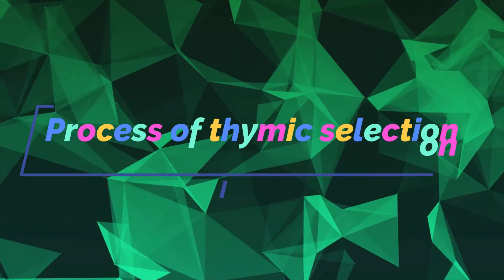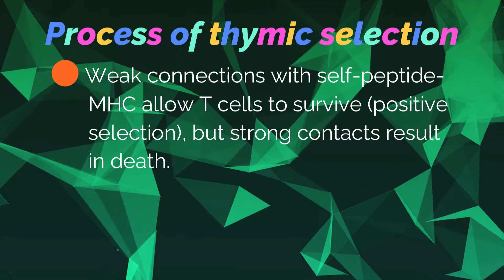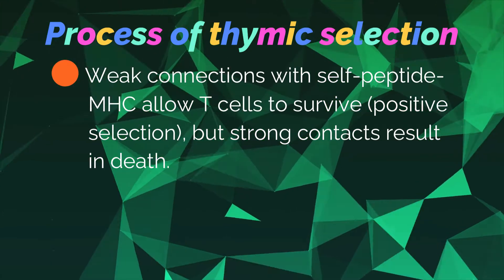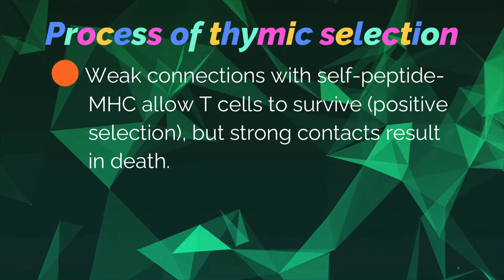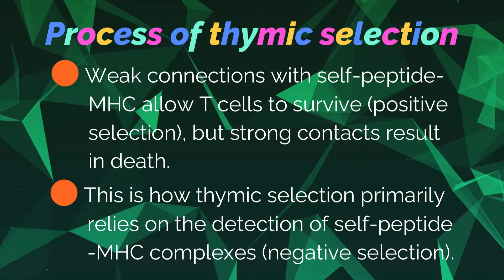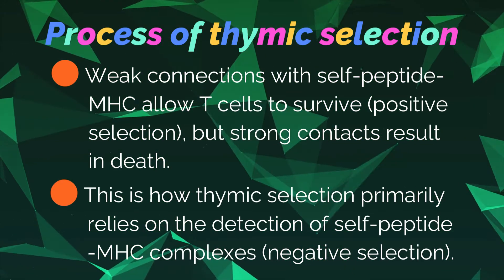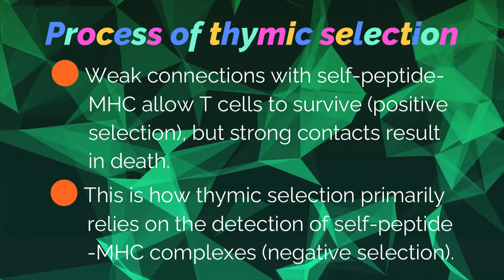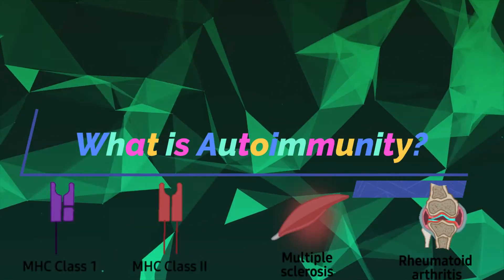What is the process of thymic selection? Weak connections with self-peptide MHC allow T cells to survive — this is positive selection. But strong contacts result in death — this is negative selection. Thymic selection primarily relies on the detection of self-peptide MHC complexes.